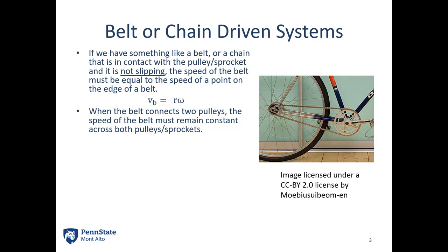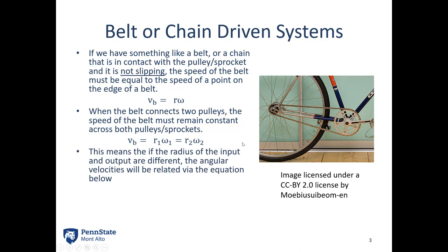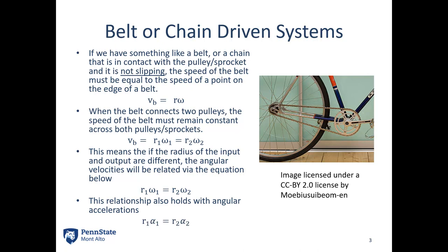Assuming we've got a fairly rigid belt or chain, the velocity of the belt must be constant and the relation holds across both pulleys. So the velocity of the belt equals r1 times omega1, which also equals r2 times omega2. This means if the radii of the input and output differ, the angular velocities must adjust accordingly. The same relationship holds for angular accelerations: r1·alpha1 equals r2·alpha2.